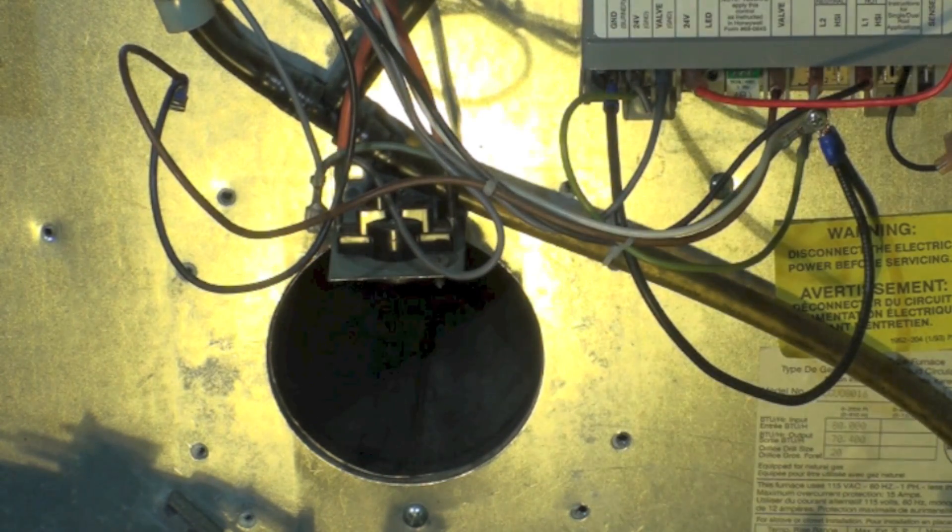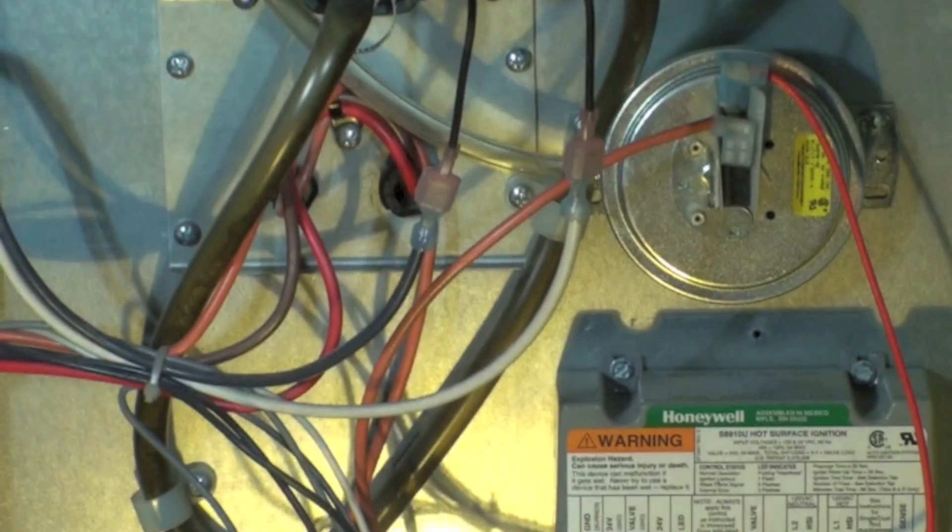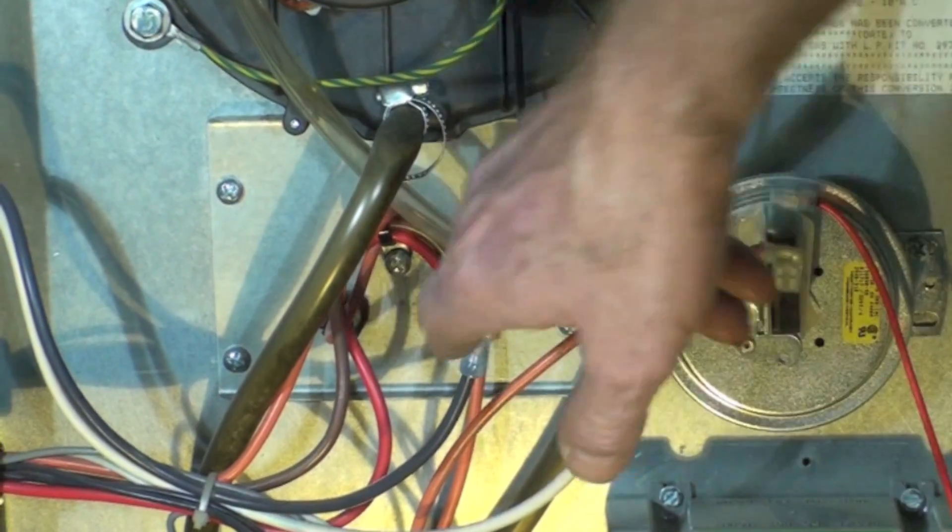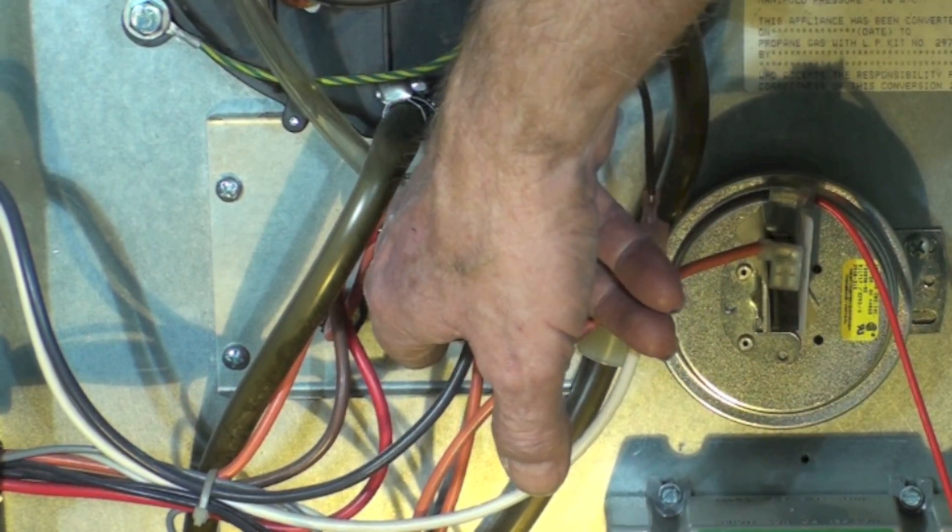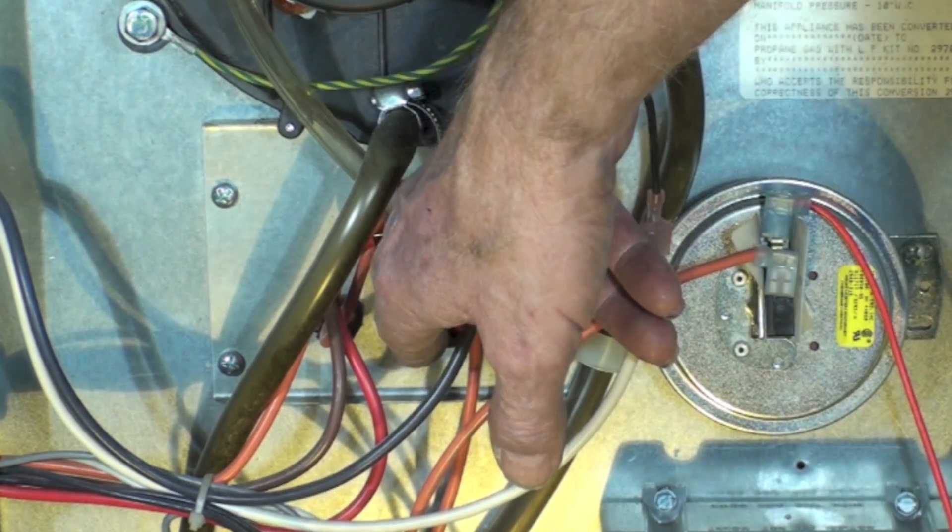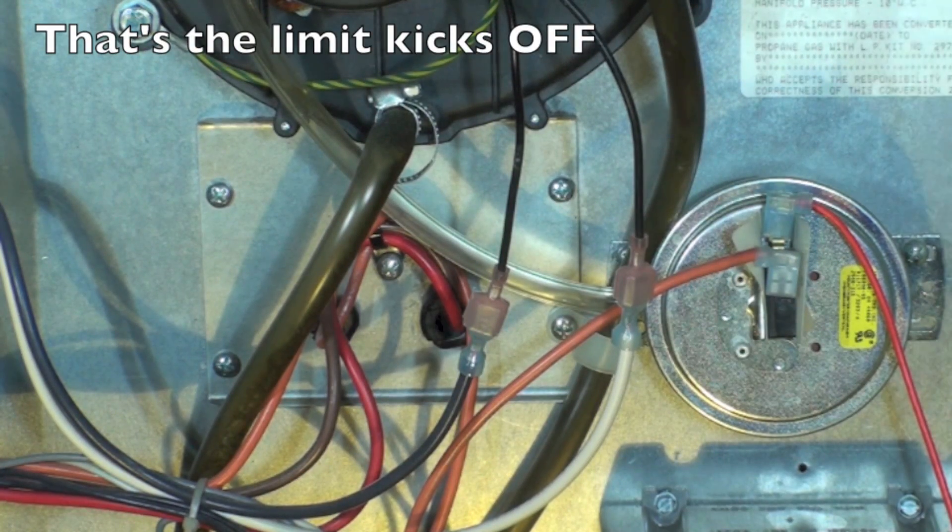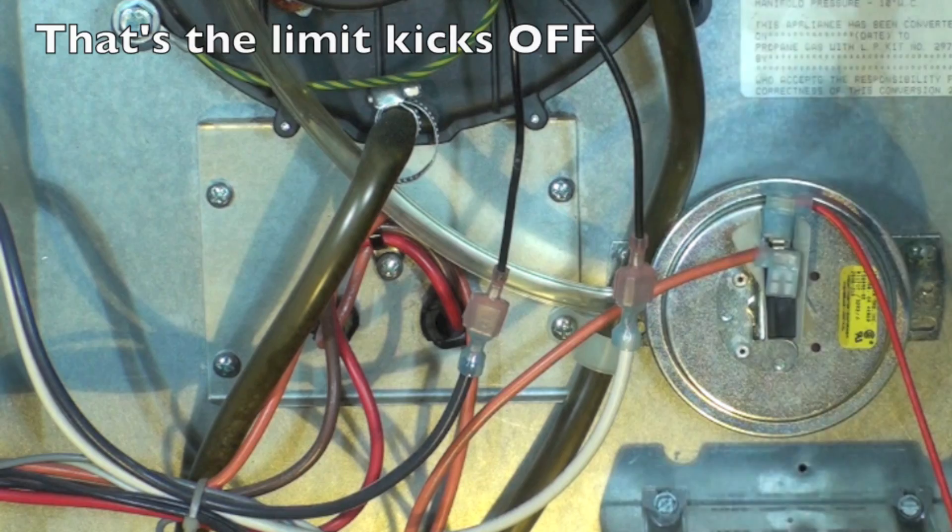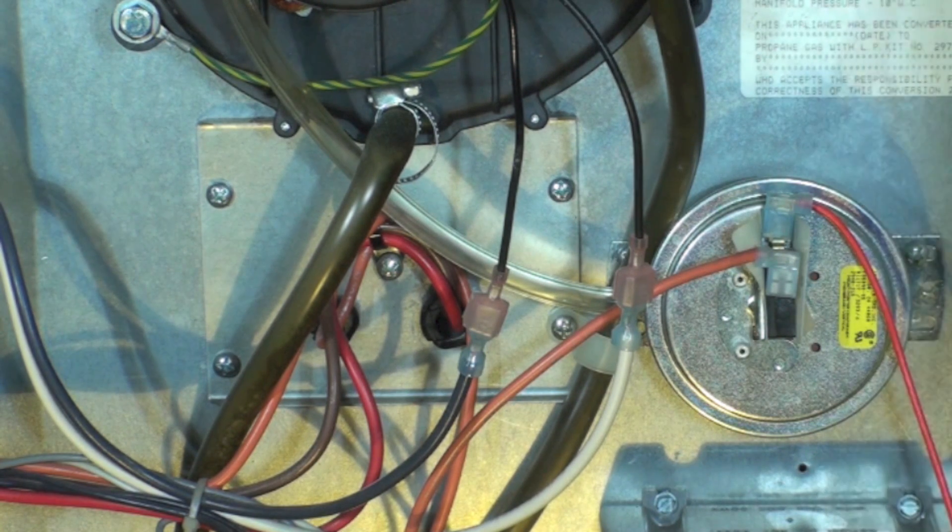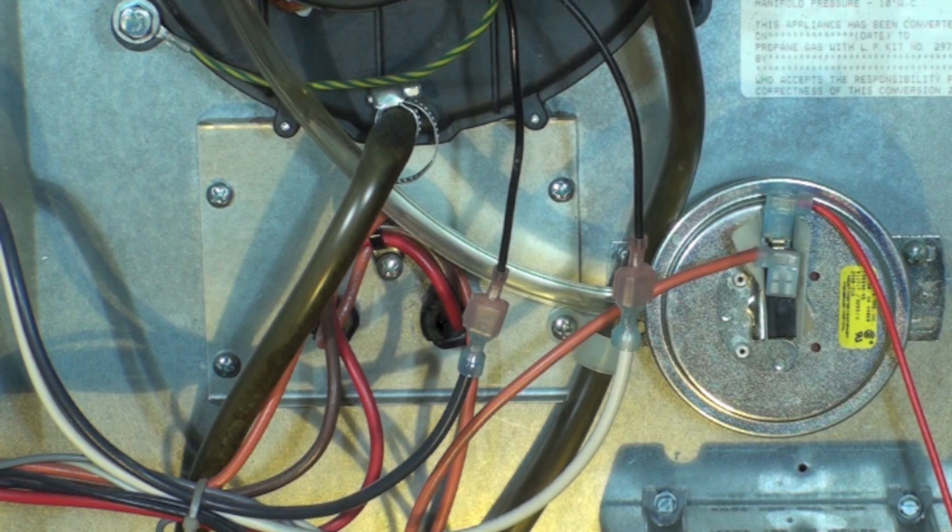This one has an odd place for limits - the limits are right back here. Fan switch and limit switches right back there. If the limit switch kicks on right after the fan comes on or even before the fan comes on, that's a big indication of a cracked heat exchanger.